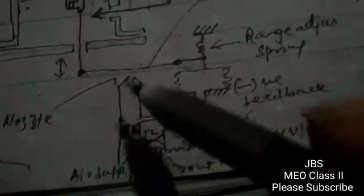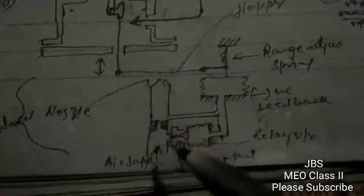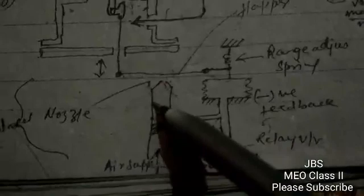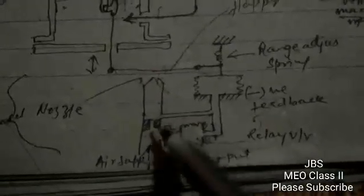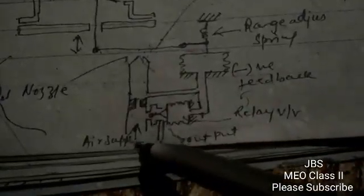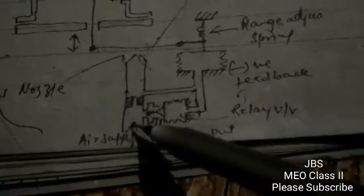Now friends, we have to consider one more thing here — this is the transducer portion. What is the transducer here? This arrangement is called the nozzle and flapper arrangement. In this nozzle and flapper arrangement, I would request you to please subscribe to my channel, because afterwards I will be posting more videos on nozzle and flapper arrangement and proportional and integral controller. Now let us see how it works. This is the nozzle, this is the flapper, and here a 1.222 bar air supply is there.